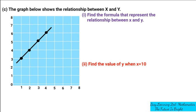The formula for gradient is M = (Y2 − Y1) / (X2 − X1). Among these four points, we're going to pick two points to use for finding the gradient. We'll use the point with coordinates (1, 3) as well as the point with coordinates (2, 4).